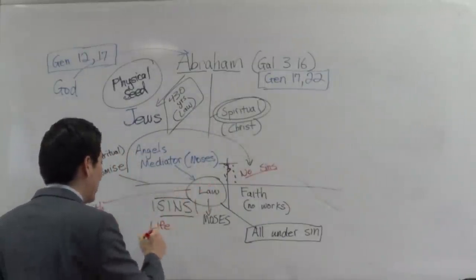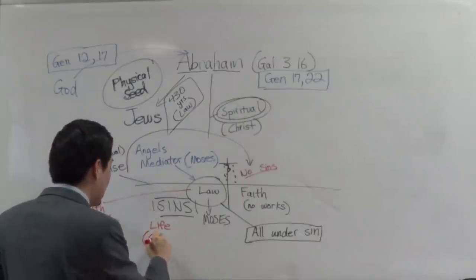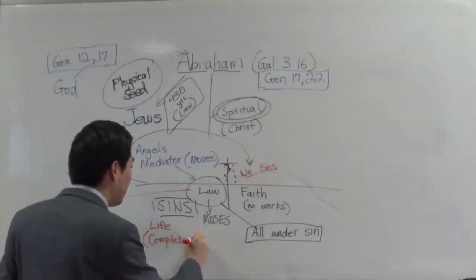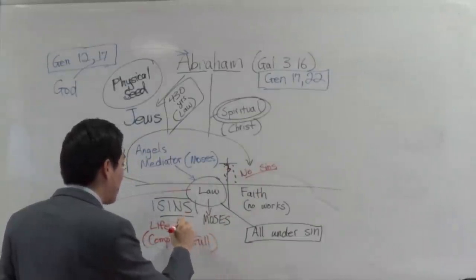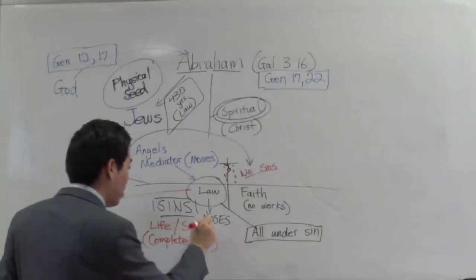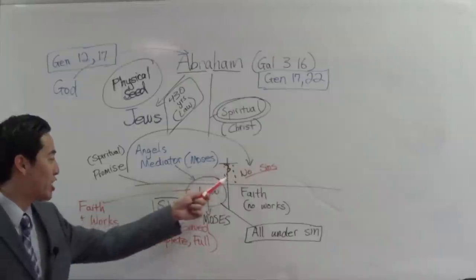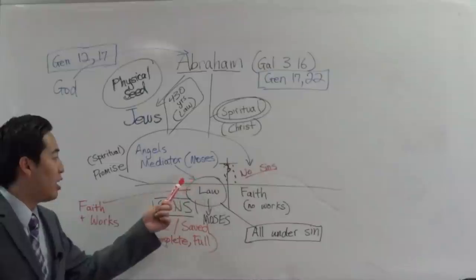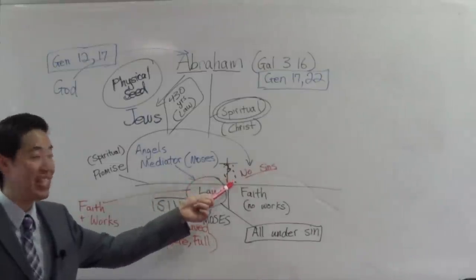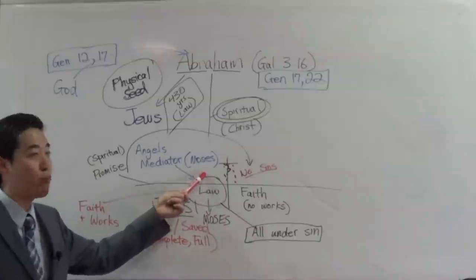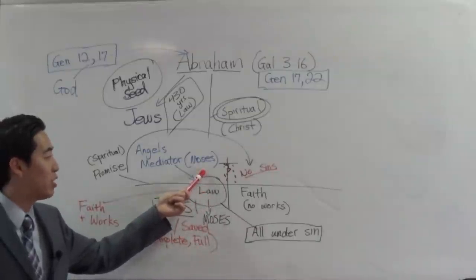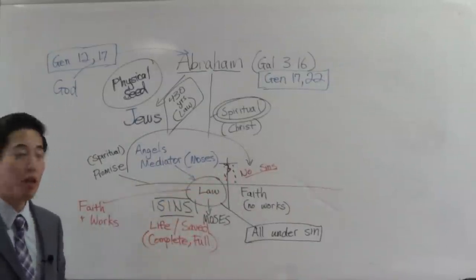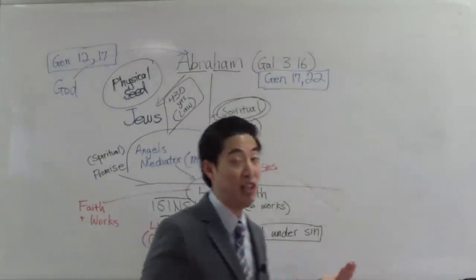How do we rightly divide this? Very simple. The life that was given under the law could not give complete, full life. When it talks about life or saved, the completeness and the fullness was until the seed should come. Paul said the law had to be there until the seed comes. The law was a temporary basis. It was something partial until this person comes in and completes the payment.